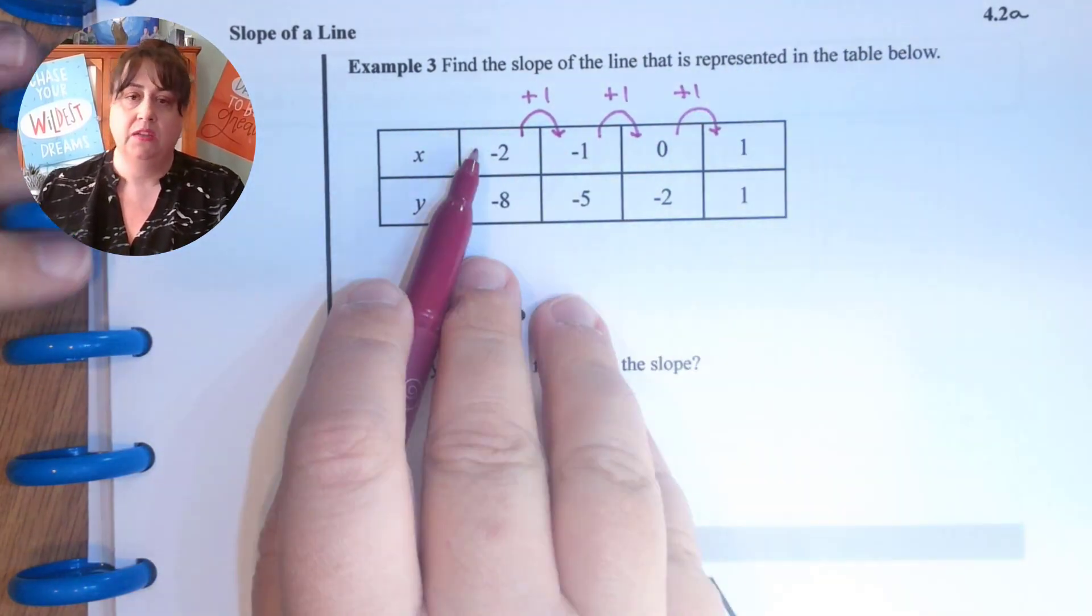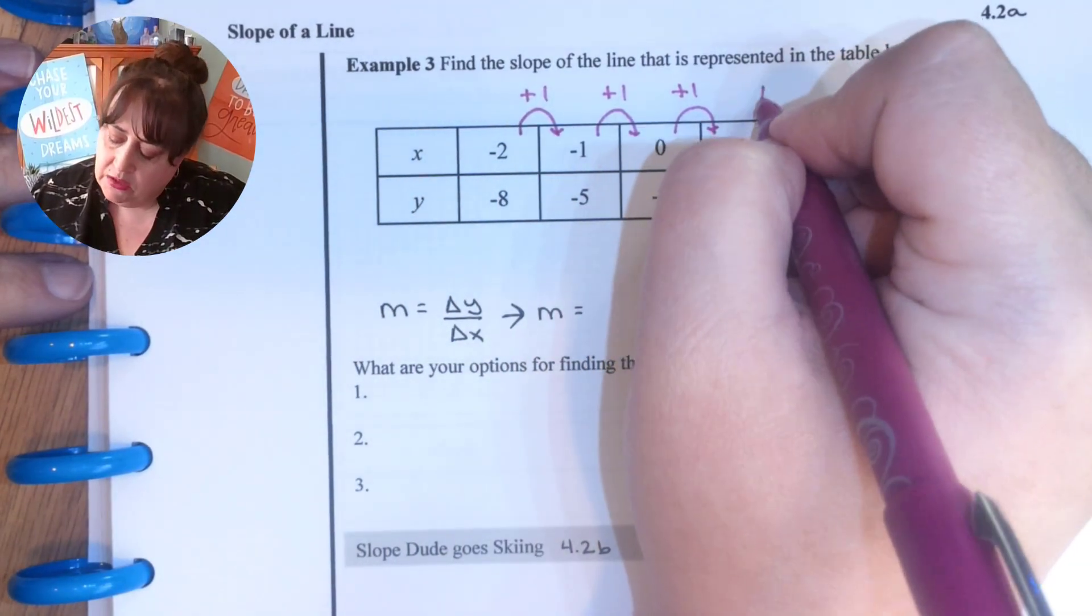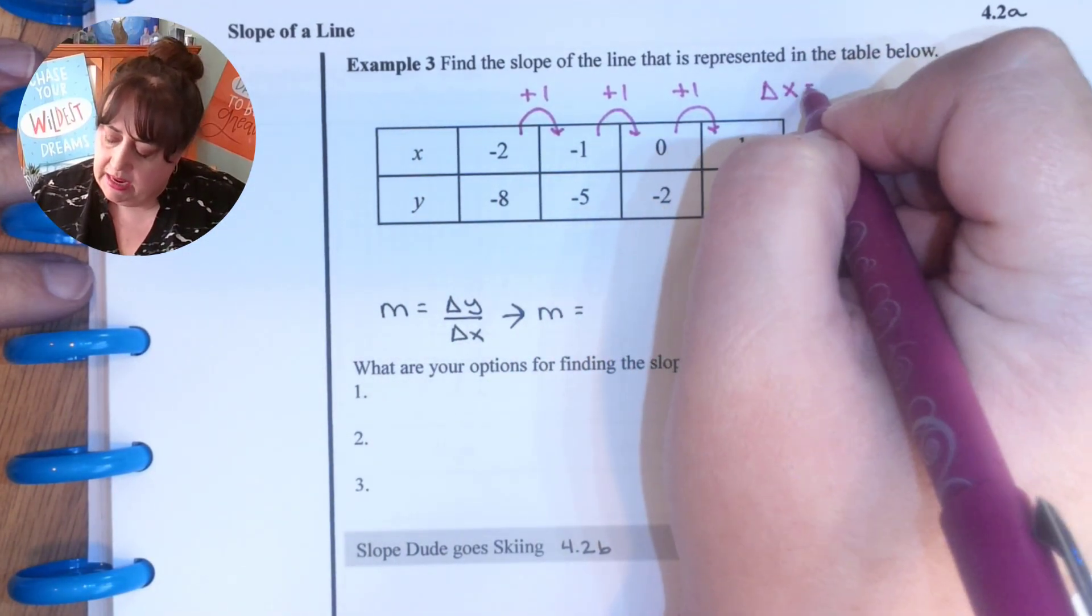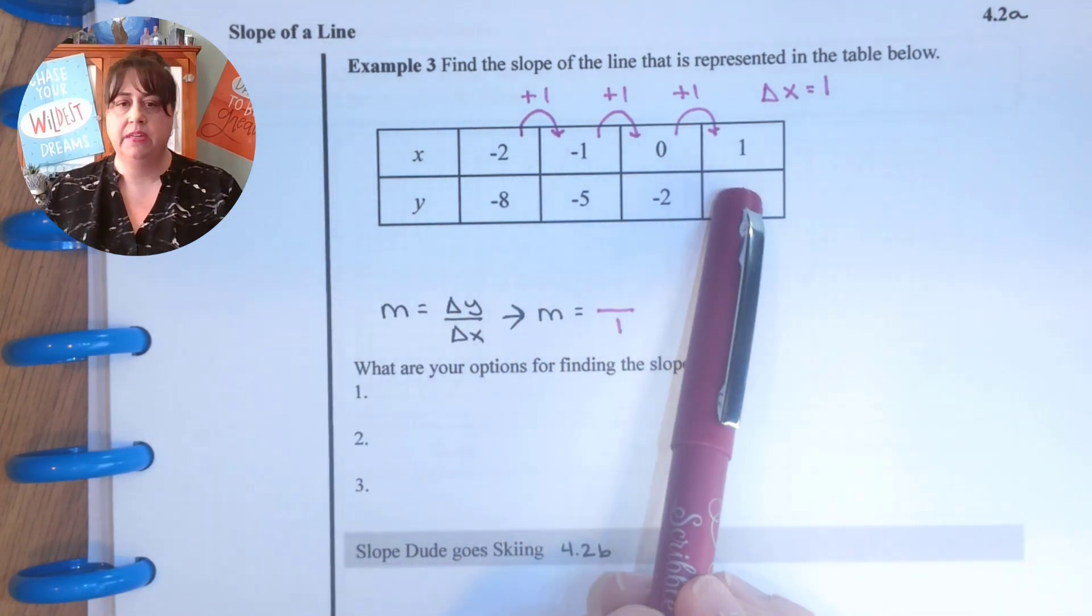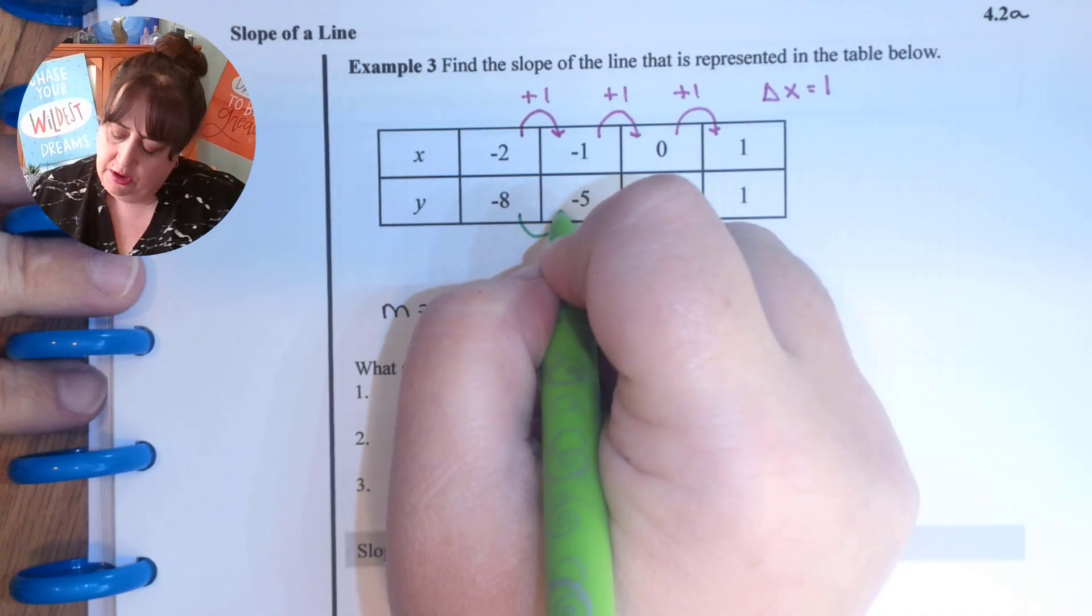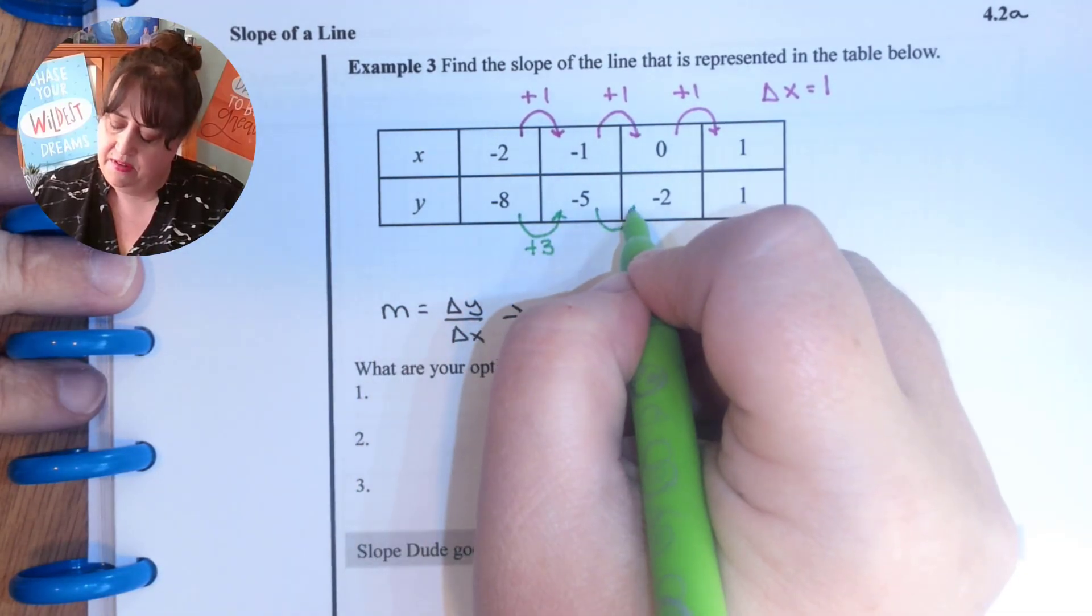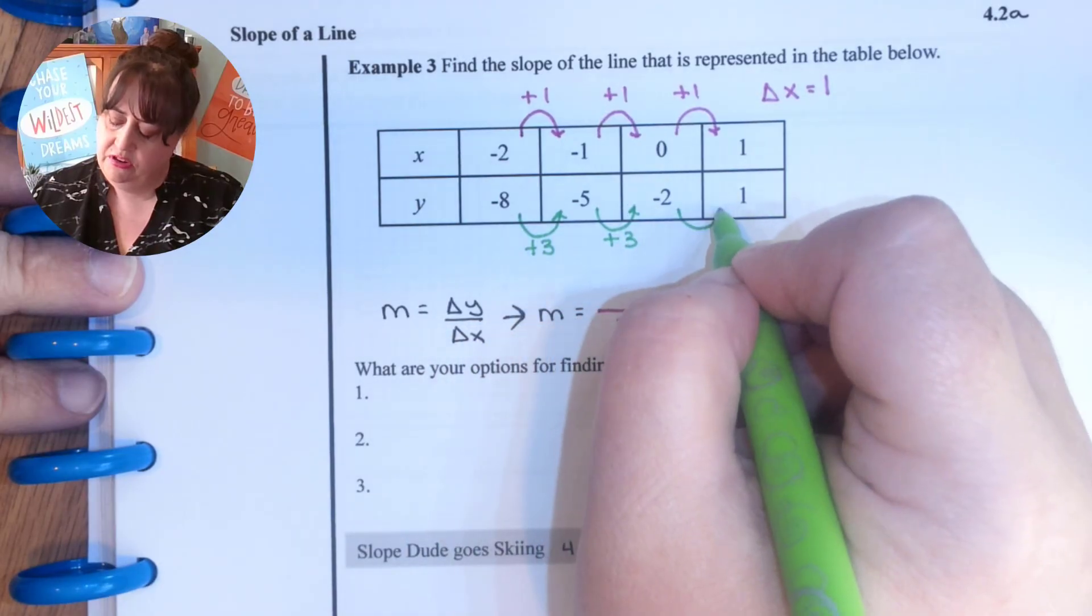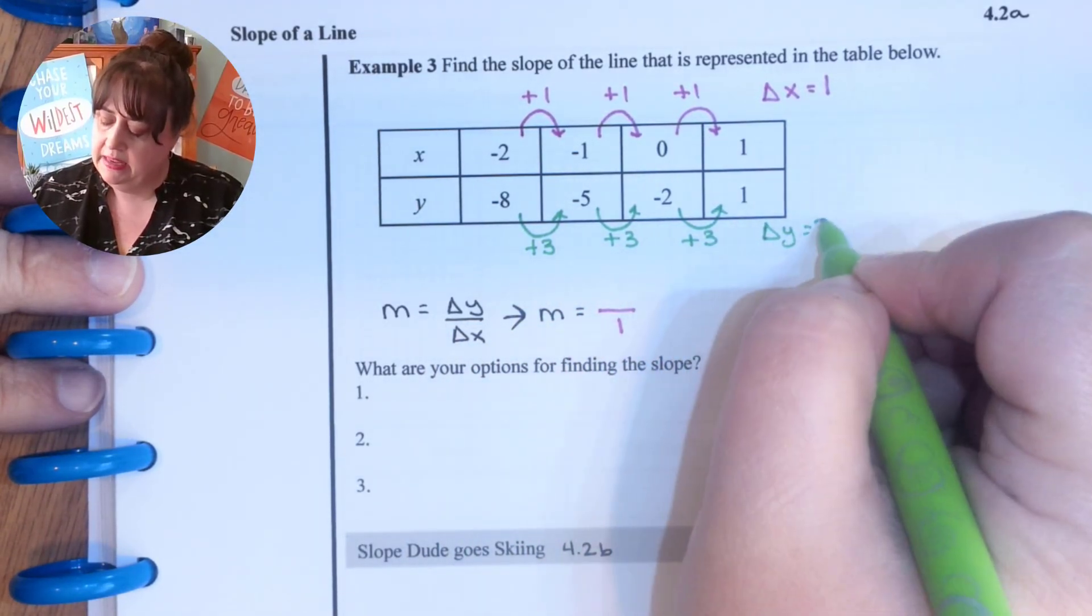So this is pretty consistent. I'm adding one every single time. So my delta x looks like one. It was consistent. Now, if these down here are also consistent, I have a slope. If they are not consistent, then this is not linear. Negative eight to negative five, that would be a three. Negative five to negative two, that would also be a three. Negative two to positive one is also a positive three. So our delta y is three.